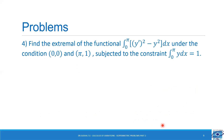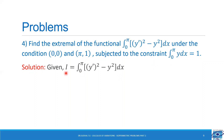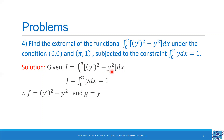Now let us see one more problem: find the extremal of the functional integral 0 to pi of y' square minus y square dx under the conditions y(0) equal to 0 and y(pi) equal to 1, subjected to the constraint integral 0 to pi of y dx equal to 1. So f equal to y' square minus y square and g equal to y. Let us form the new expression h equal to f plus lambda g equal to y' square minus y square plus lambda y.